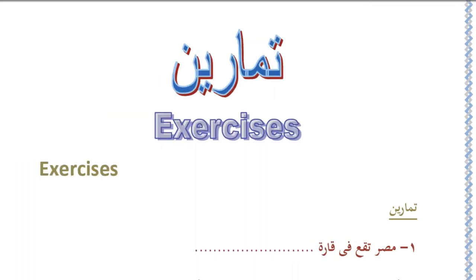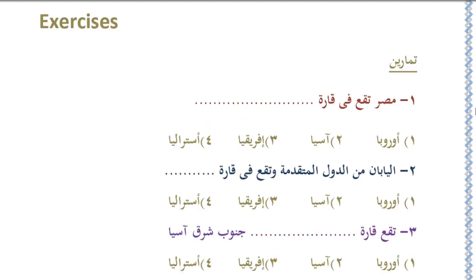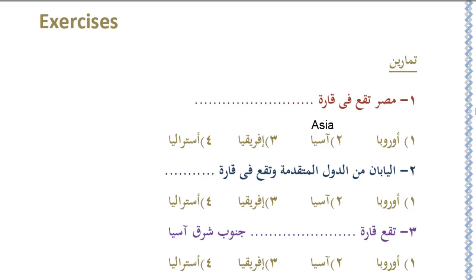Exercises — don't worry, it's very easy. Exercises in Arabic. First question: Misr taqau fi qara — Egypt is located in which continent? One: Urubba (Europe), Two: Asia, Three: Ifriqiya (Africa), Four: Australia. Which one is the correct answer? If you said number three, Ifriqiya — Africa — you are right.